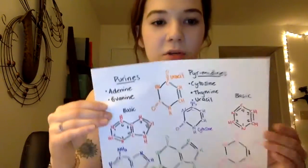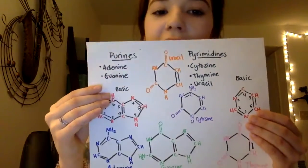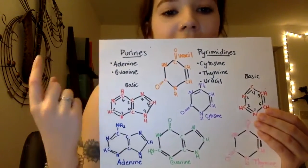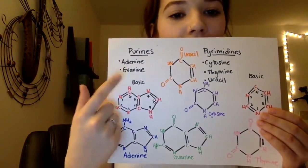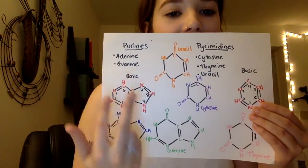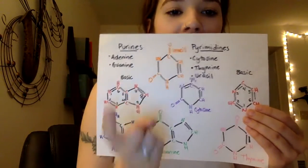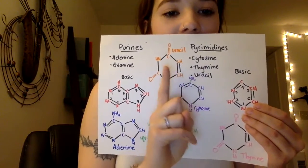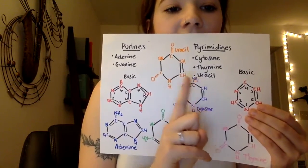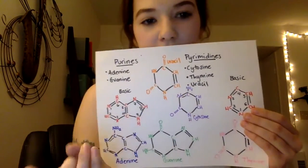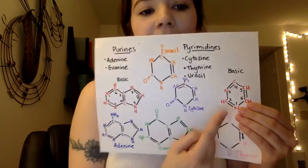Then we have purines and pyrimidines. Purines are adenine and guanine and they have two rings. Pyrimidines are cytosine, thymine, and uracil. Uracil is only in RNA and it only has one ring.